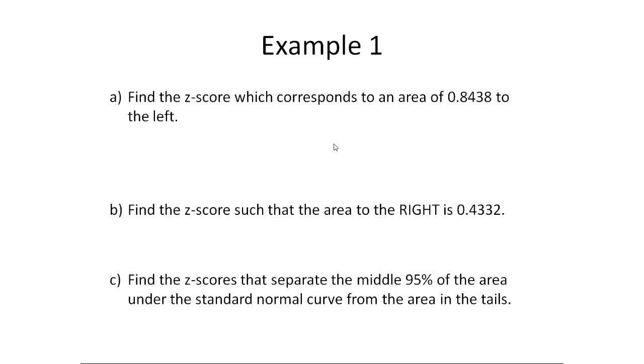Hello, this is Jeremy, and in today's video, I'm going to show you how to use a TI-83 or 84 calculator to find z-scores when you're given areas or probabilities. Now this can be converted into a method for finding values when you have any normal distribution.